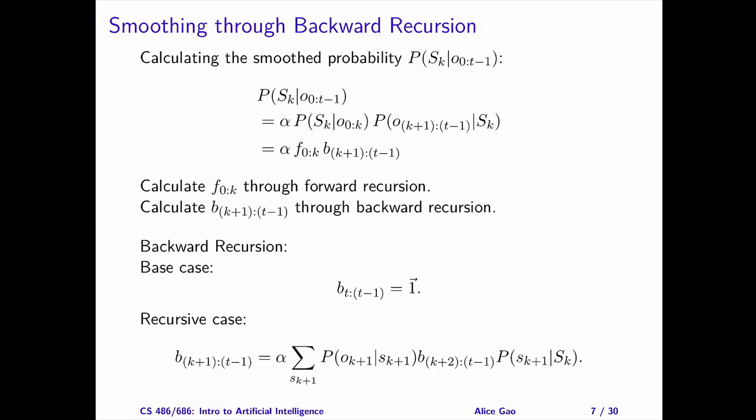To calculate a smooth probability, we will make use of two recursions, forward and backward recursion. First, we'll take the probability and write it as a normalized product of two probabilities.